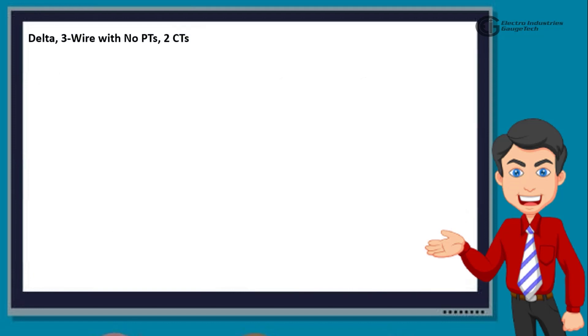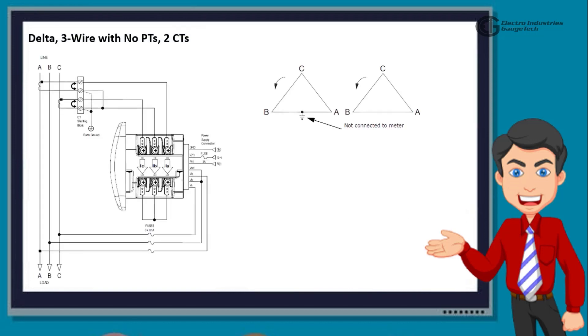The next one is Delta, 3 wire with no PTs, 2 CTs. This diagram shows 3 phase, 3 wire Delta connection with direct voltage. When using this wiring, select 2 CT-Delta from the Shark Meter's front panel display.